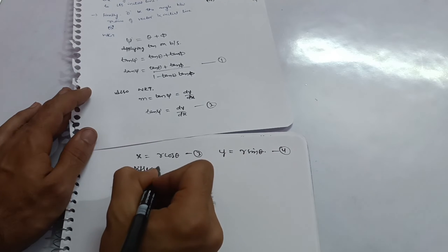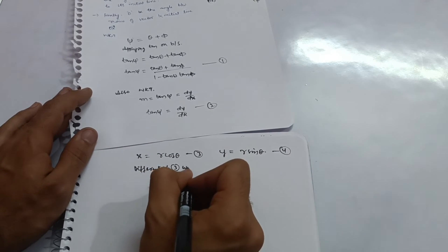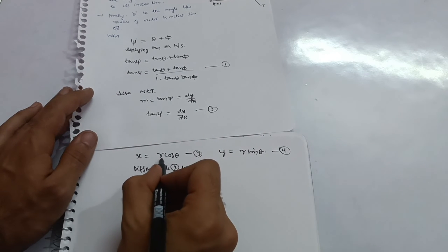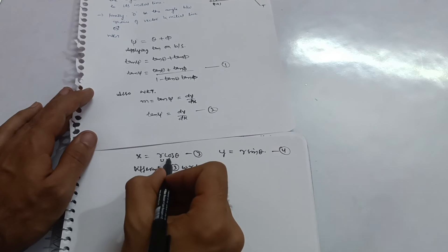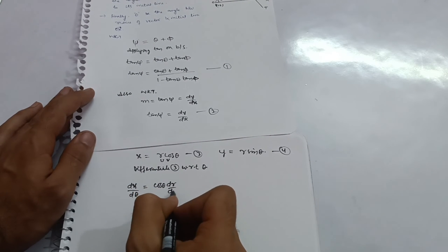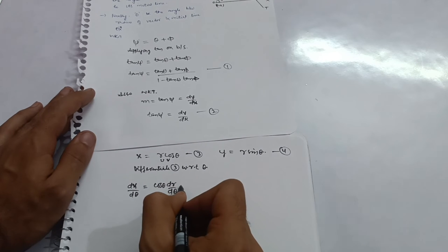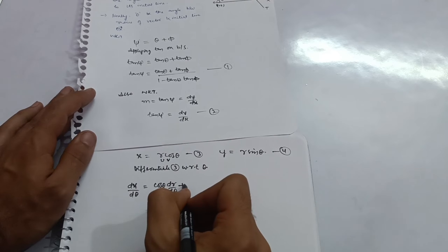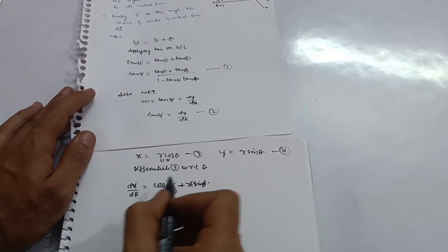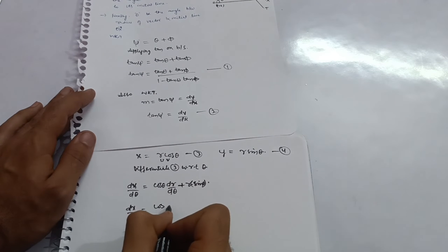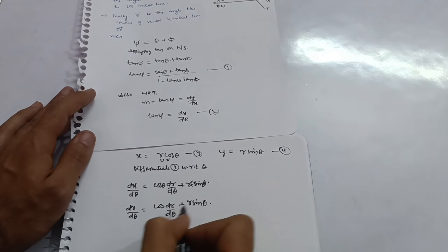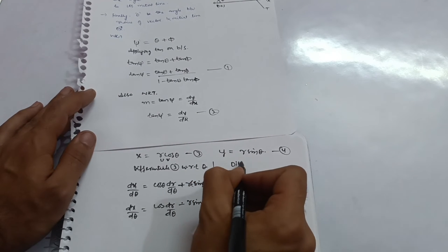Differentiating the third equation x = r cos θ with respect to θ using the product rule: dx/dθ = cos θ · (dr/dθ) + r · (−sin θ), which gives dx/dθ = cos θ · dr/dθ − r sin θ.